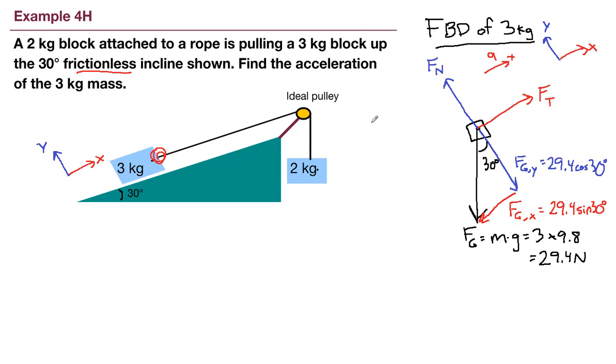Now we move our attention to the two kilogram block. So the free body diagram of the two kilogram block is a little bit simpler. We have gravity acting on it. So gravity is straight down as gravity tends to be. And we've got two times 9.8, which is 19.6 Newtons.